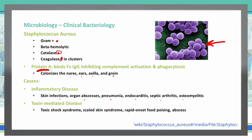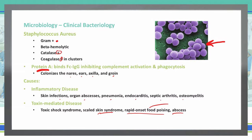Staphylococcus aureus can also cause toxin-mediated disease. We can see toxic shock syndrome, scalded skin syndrome, rapid onset food poisoning, and abscesses. A particular note on food poisoning: we are ingesting a preformed toxin with a short incubation period — typically about two to six hours — followed by non-bloody diarrhea and vomiting. That preformed toxin is heat stable, so it is not destroyed by cooking the food.